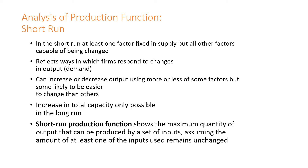In the short run, there should always be at least one fixed factor in constant supply, but all other factors of production should be capable of being changed. This reflects ways in which firms respond to changes in output from consumer demand — they can increase or decrease output using more or less of some factors. The increase in total capacity is only possible in the long run. Therefore, the short run production function shows the maximum quantity of output that can be produced by a set of inputs, assuming at least one input remains unchanged. We'll see this in the production possibility frontier.